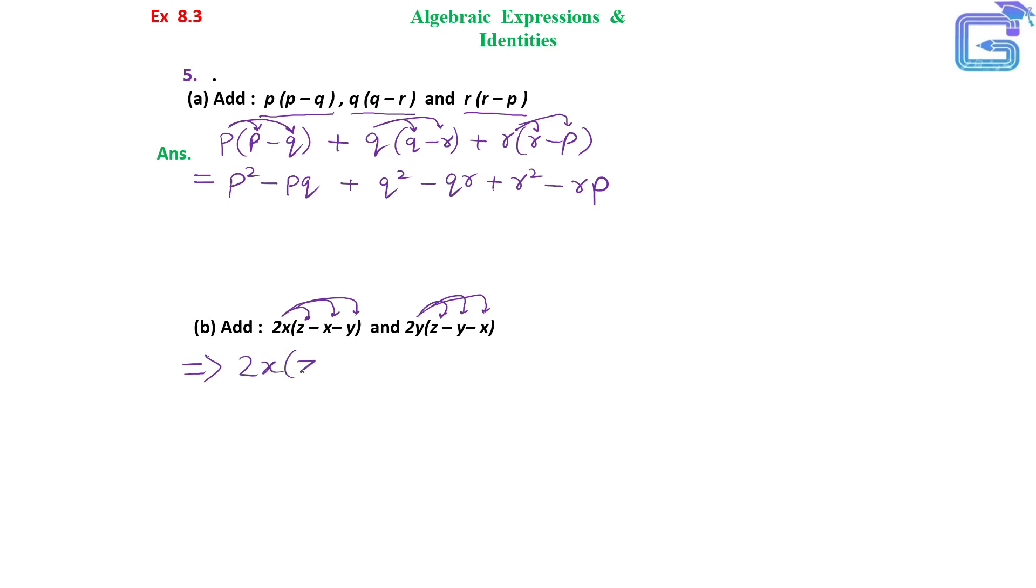So basically the question given is this: 2x bracket Z minus X minus Y and 2y bracket Z minus Y minus X. We will multiply 2x with the trinomial, so 2x into Z is 2xZ minus 2x into X is 2x square minus 2x into Y is 2xy. Then 2y into Z is 2yZ minus 2y into Y is 2y square minus 2y into X is 2xy.